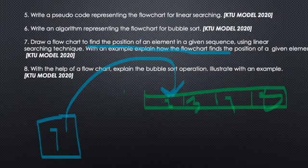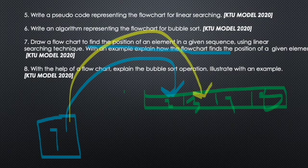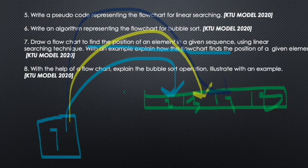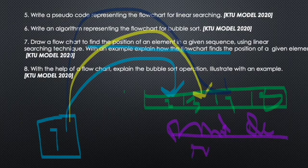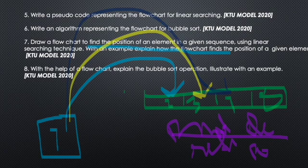7 is equal to 2 — no. Then the next element: 7 is equal to 3 — no. Then the next element: 7 is equal to 7 — correct. When we have the same element, we use 'element found'. The element found is printed. I will return the position. This is the logic.